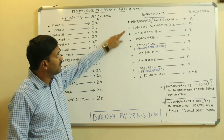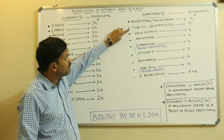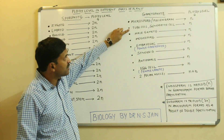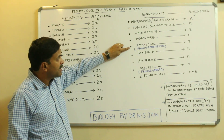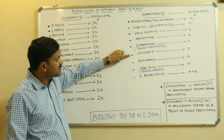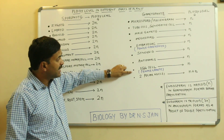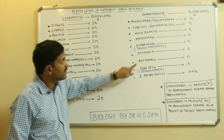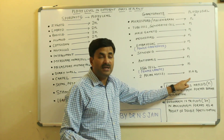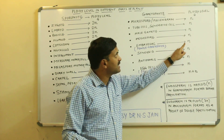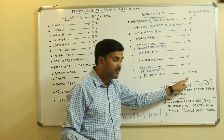So the ploidy levels of microspore, tube cell and generative cell, male gamete, megaspore, embryo sac, synergids, antipodals, egg cell, and the two polar nuclei — all have haploidy, or we can say the ploidy level is N.